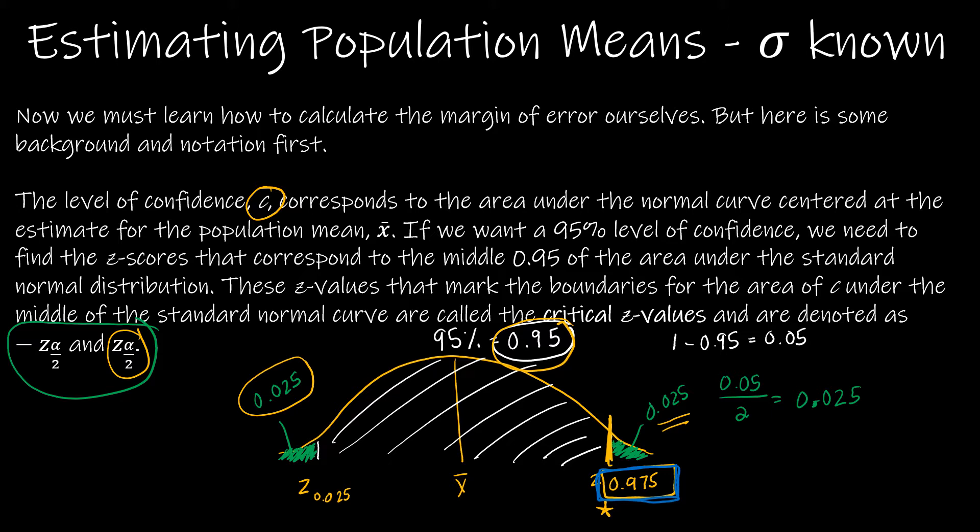Again, if we have 95% in the middle, that leaves 5% in the tails, half in each tail. So half of 5% is 2.5%. So that's where we got this 0.025. And then if I want to find how much area is to the left of this, then I'm going to add 0.95 and 0.025, or just subtract this guy from 1. And this is the value that I'm going to use when I'm using a table or using Excel.